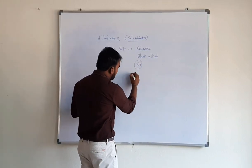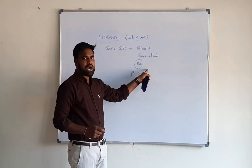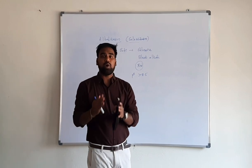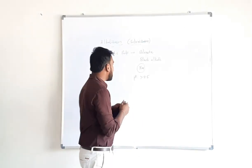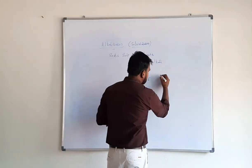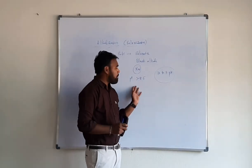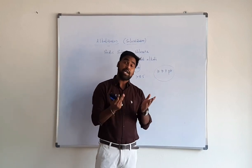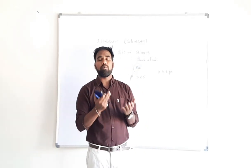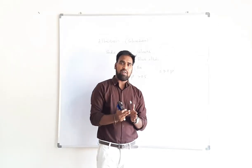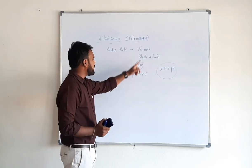The pH of sodic soils is greater than 8.5, sometimes reaching 10 to 11. This high pH occurs because sodium undergoes hydrolysis and liberates hydroxyl (OH⁻) ions. Another reason is that sodium carbonate is 100 times more soluble than calcium carbonate and magnesium carbonate, maintaining more carbonate and bicarbonate ions in solution, which increases pH.